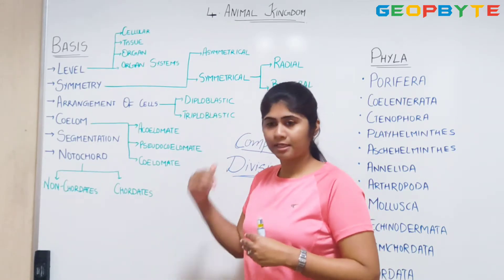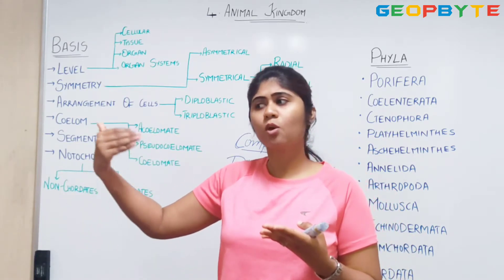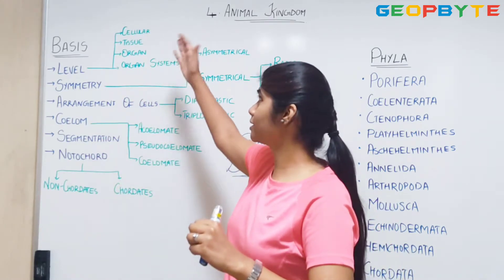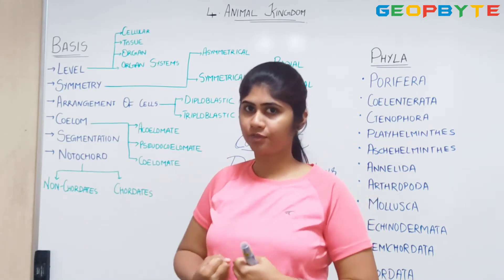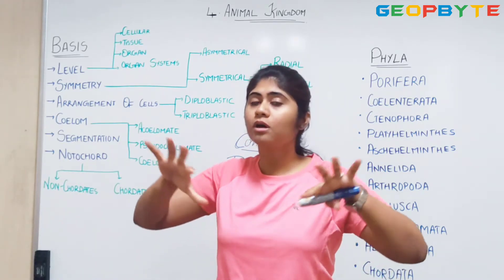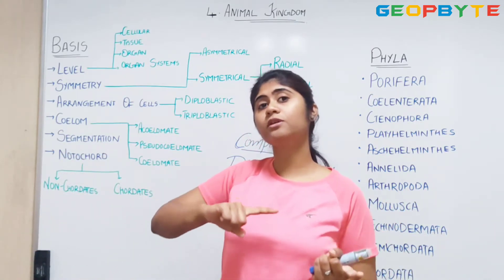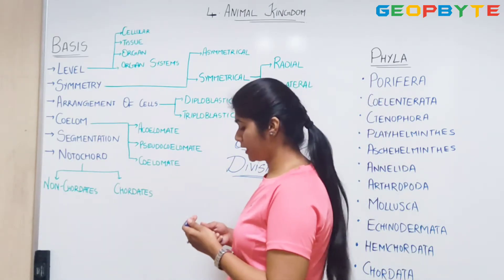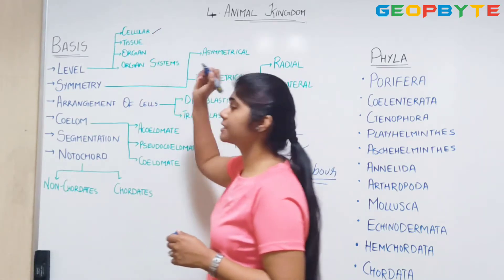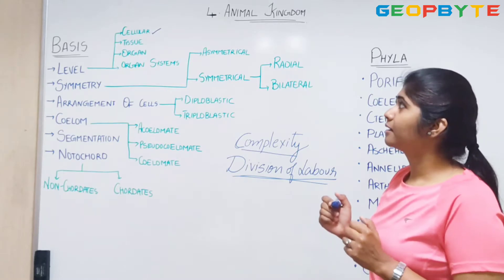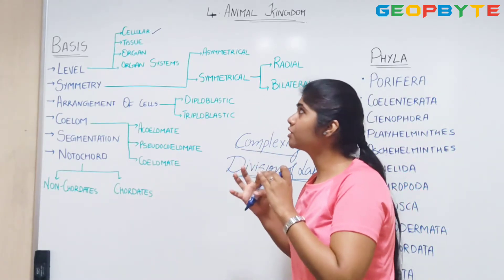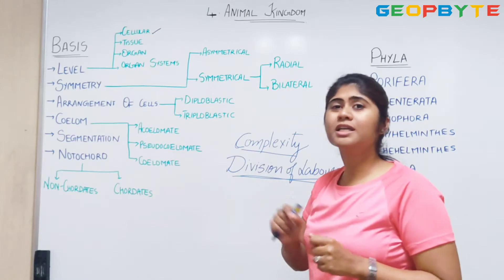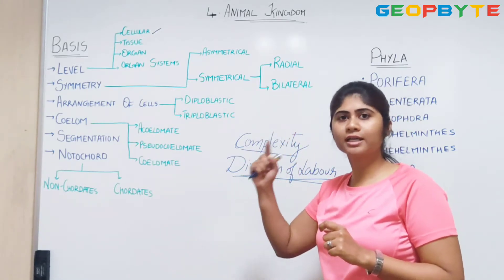Even in case of animals, all these functions like reproduction, excretion — all of these are divided amongst different layers. And depending on how well it's being spread over different things, the division of labor is efficient. The first type is the cellular level. With the name itself, the division is amongst the cells. But the division of labor is very poor in case of the cellular level of organization.